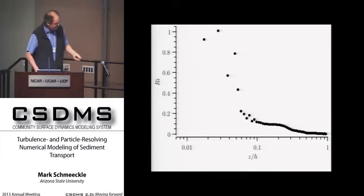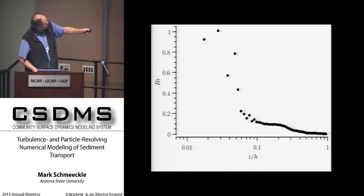We can also calculate the gradient Richardson number. Right near the bed the stratification becomes so large that you get above a quarter, and so the turbulence would be expected to be cut off.